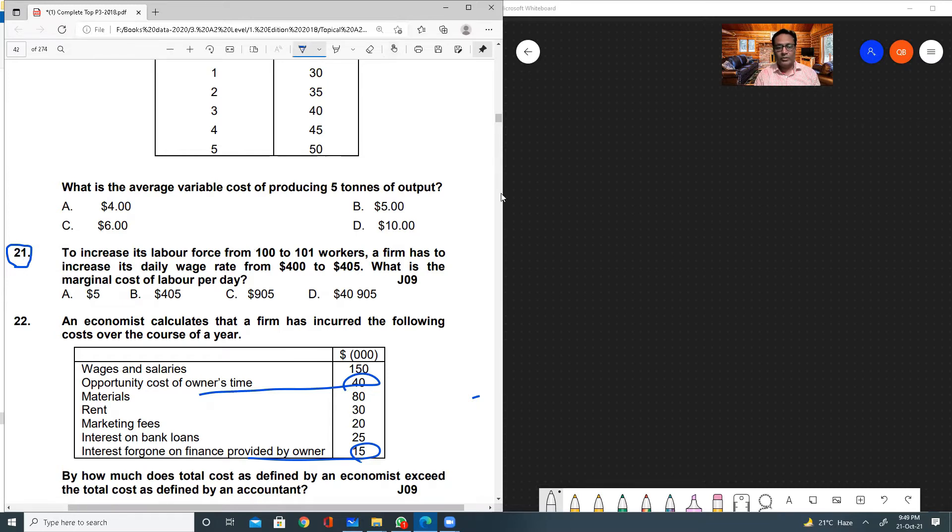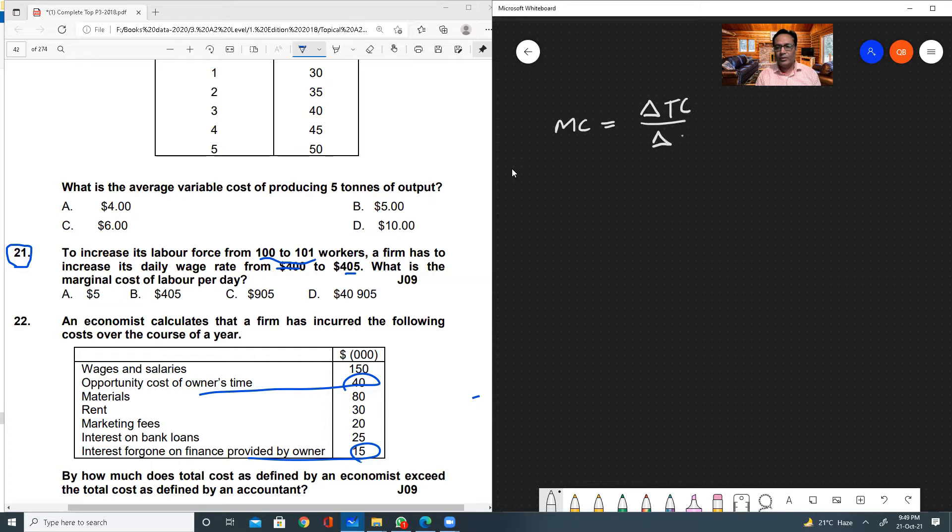I'm explaining this question. The question says to increase its labor force from 100 to 101 workers, a firm has to increase its daily wage rate from $400 to $405. What is the marginal cost of labor per day? We have to find marginal cost, and the formula is change in total cost divided by change in quantity. Here the quantity is the number of workers. We need these two figures to find the marginal cost.